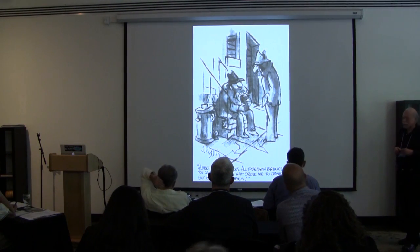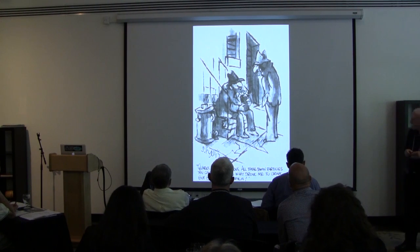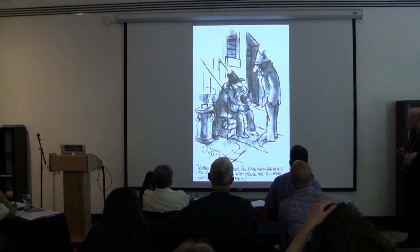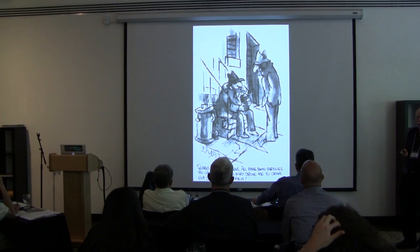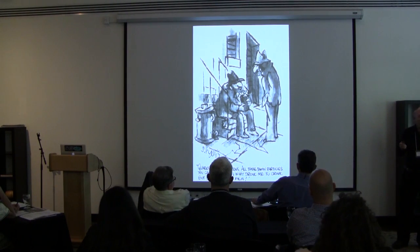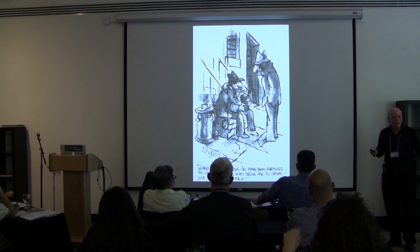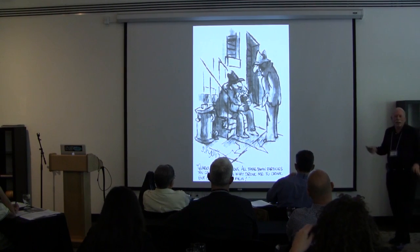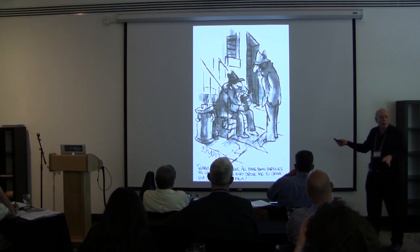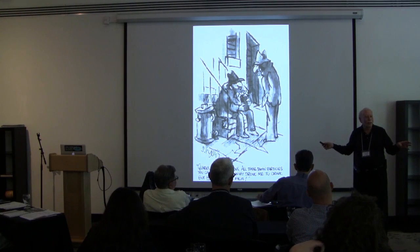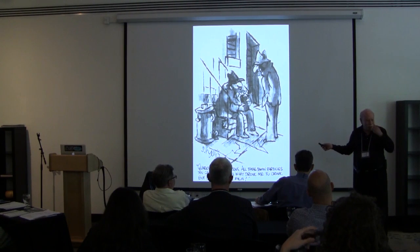The drunk on the stoop is saying to his friend: quarks, neutrinos, mesons — all those damn particles you can't see. That's what drove me to drink. But now I can see them. Now you too will see the dark matter. This reminds me to tell you that everything you're going to see in the images — everything that's bright and light — is actually invisible. It's dark matter.